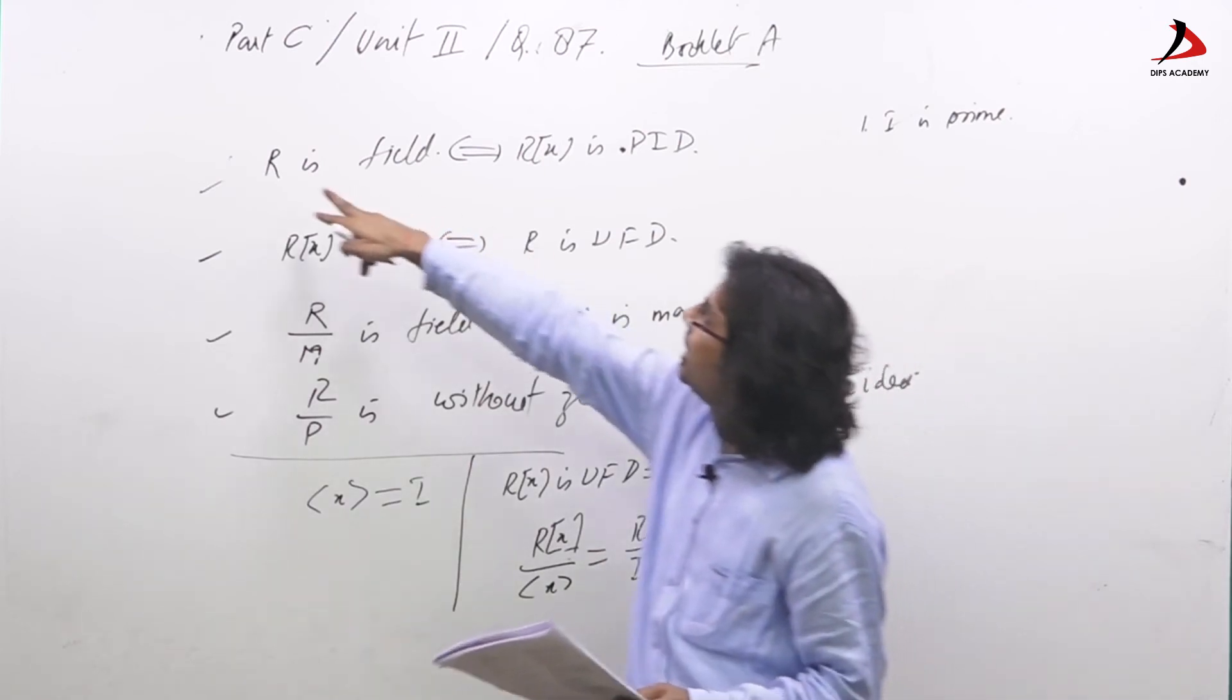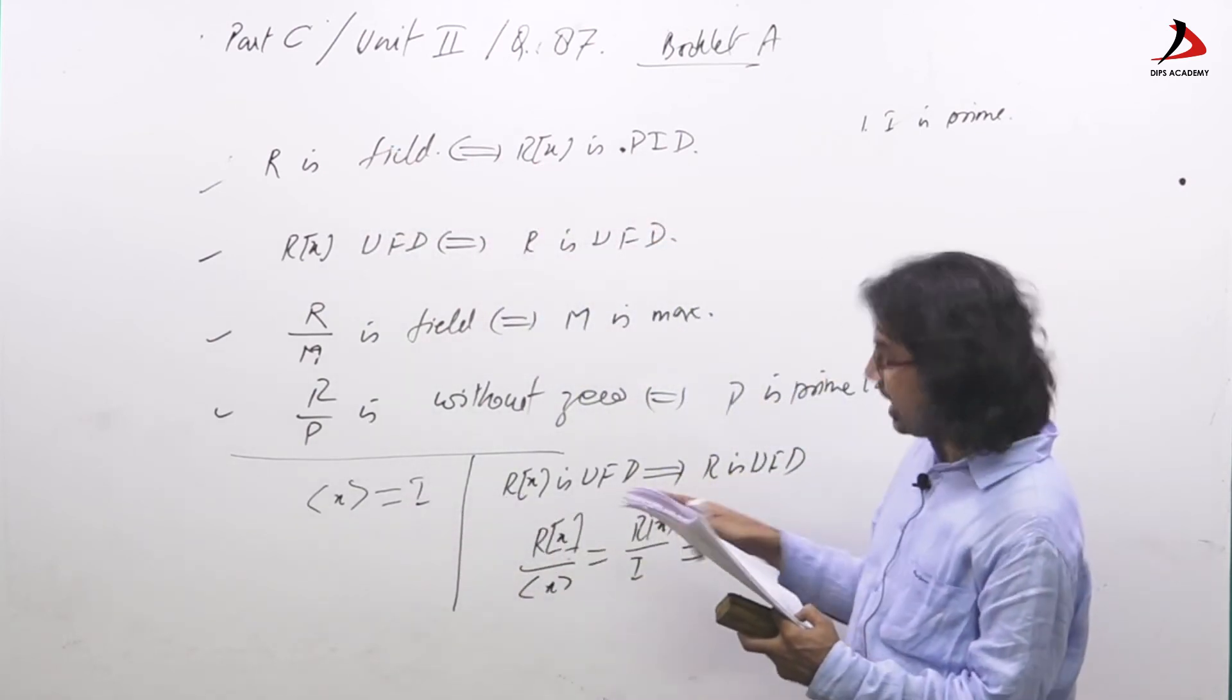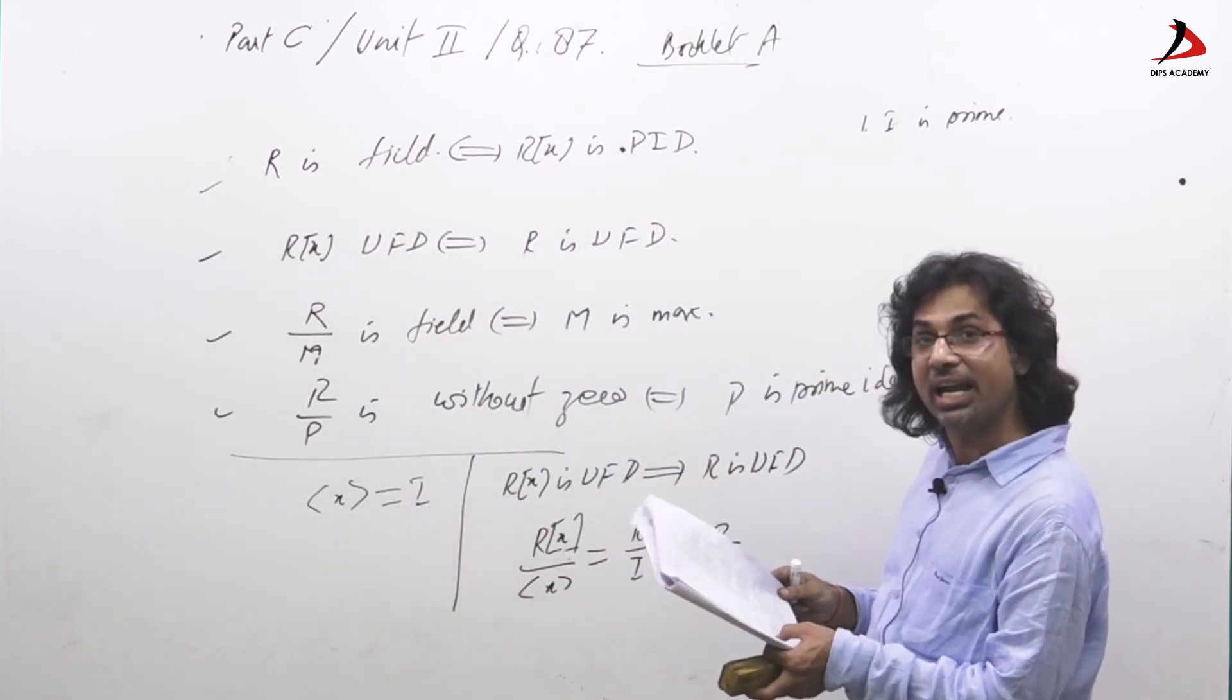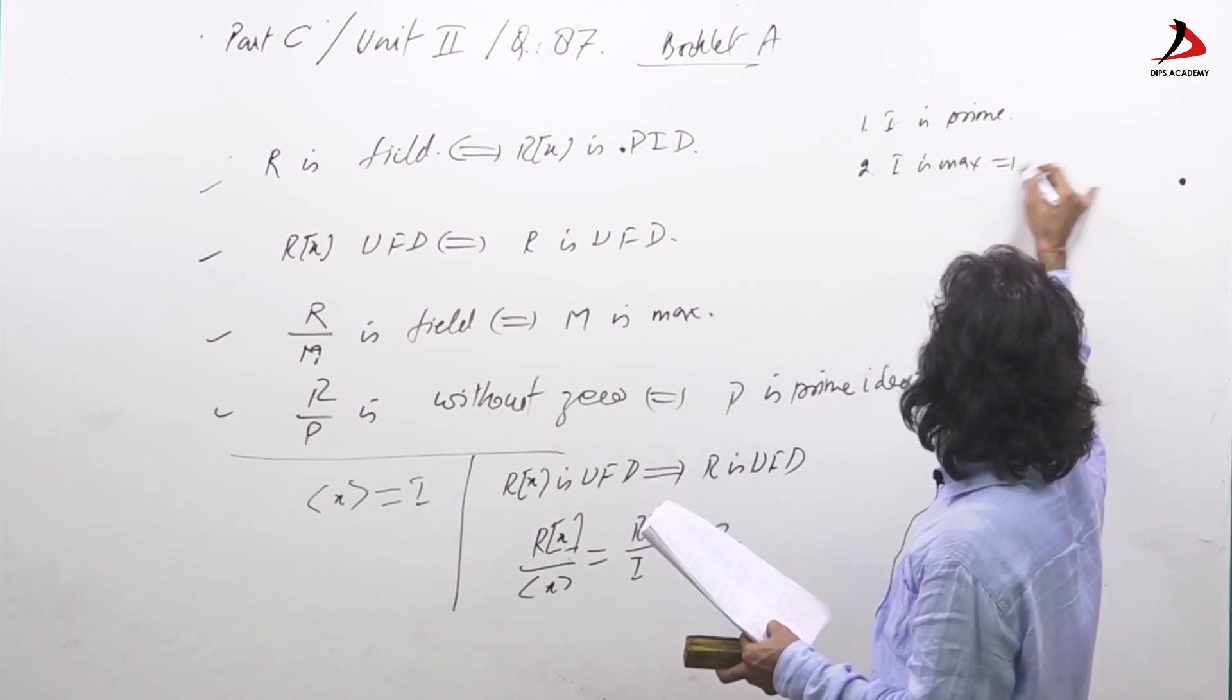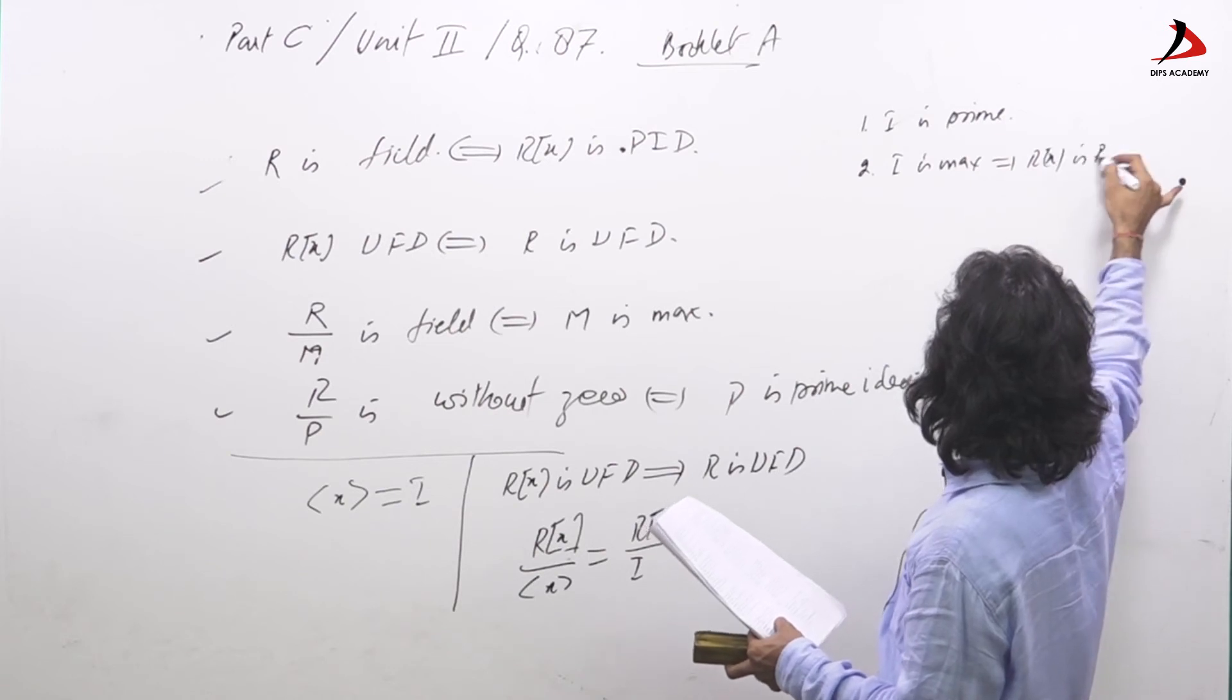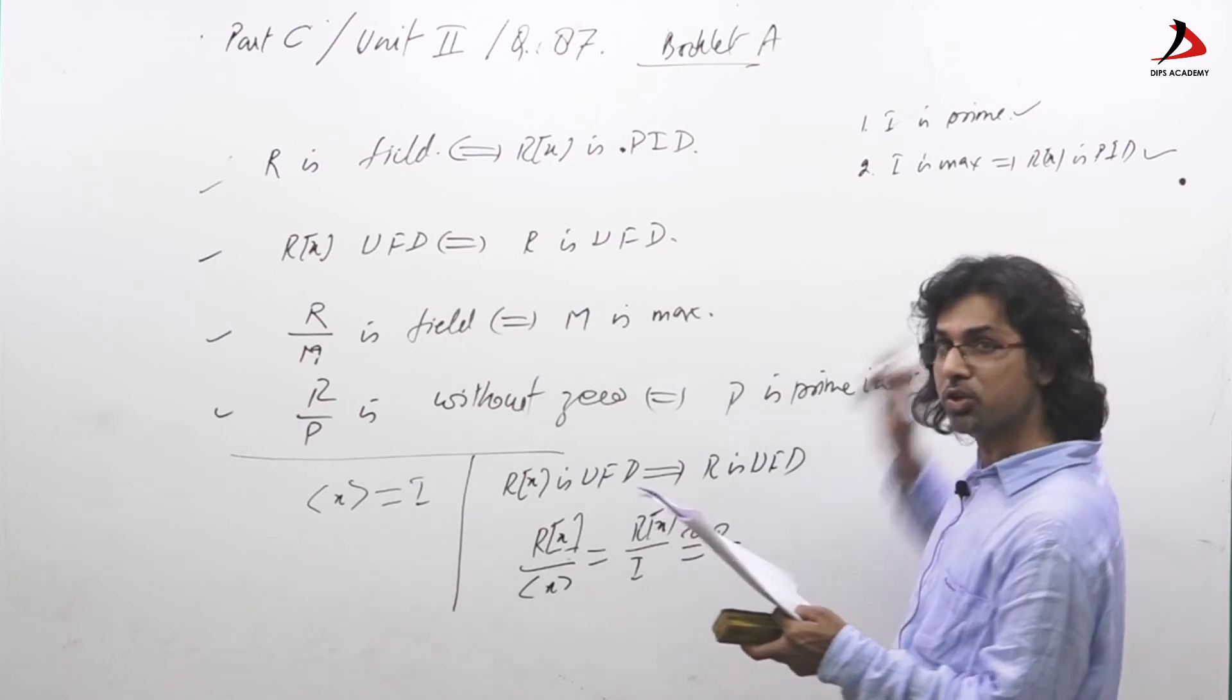Now go for this. If R is field, Rx is PID. So if I is maximal, then Rx is PID. Second result, I is maximal implies Rx is PID, is also correct. First option was correct, second is also correct.